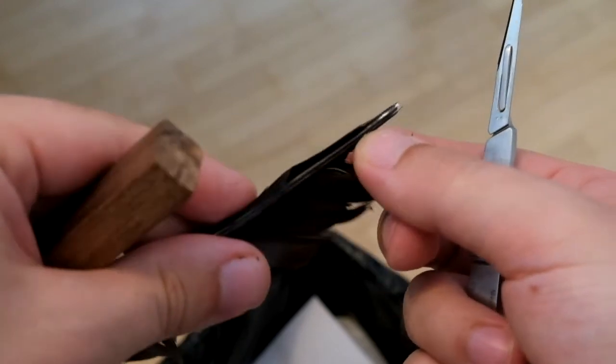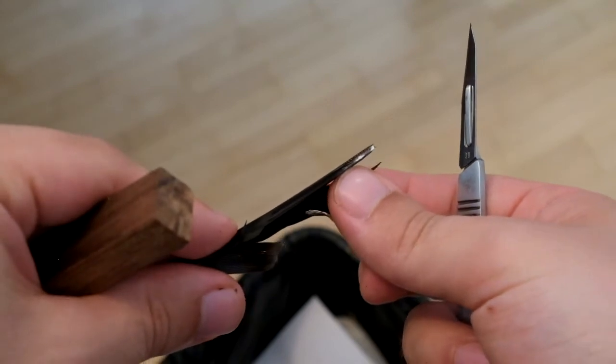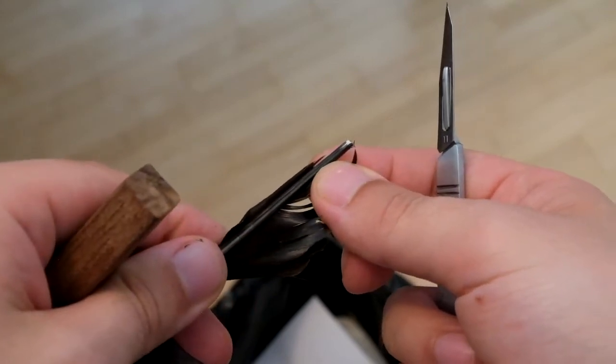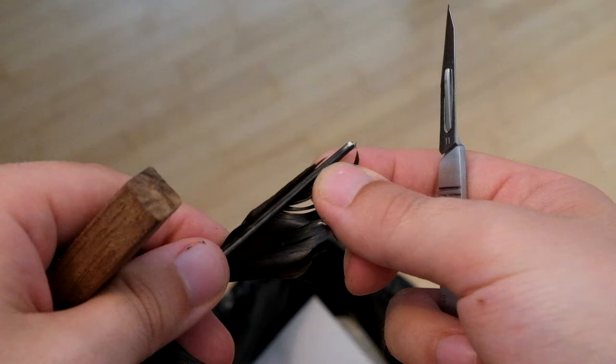Stronger feathers like seagull will need to be cleared of pretty much all their pith, whilst weaker feathers or those parts of a feather that come from the very tip will do better with some pith still remaining. In addition, the longer the plectrum, the more likely you'll need to leave some pith on there to add stability.